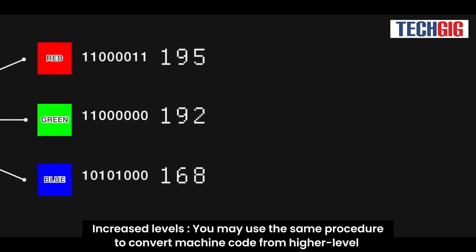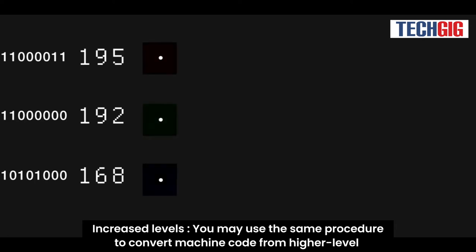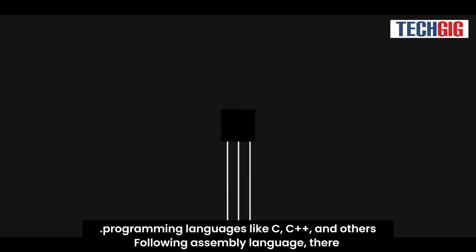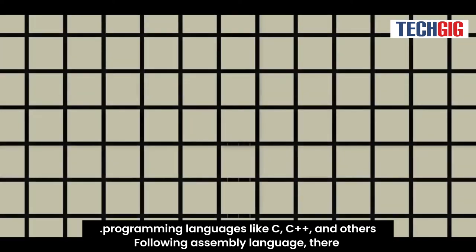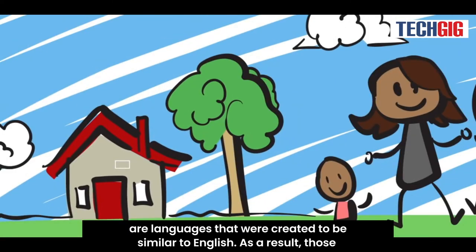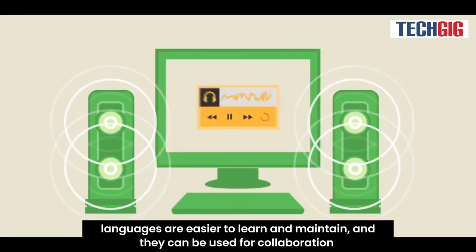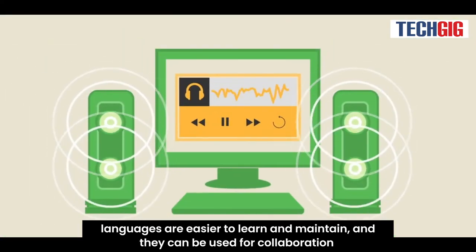Increased levels you may use the same procedure to convert machine code from higher-level programming languages like C, C++, and others. Following assembly language, there are languages that were created to be similar to English. As a result, those languages are easier to learn and maintain, and they can be used for collaboration.